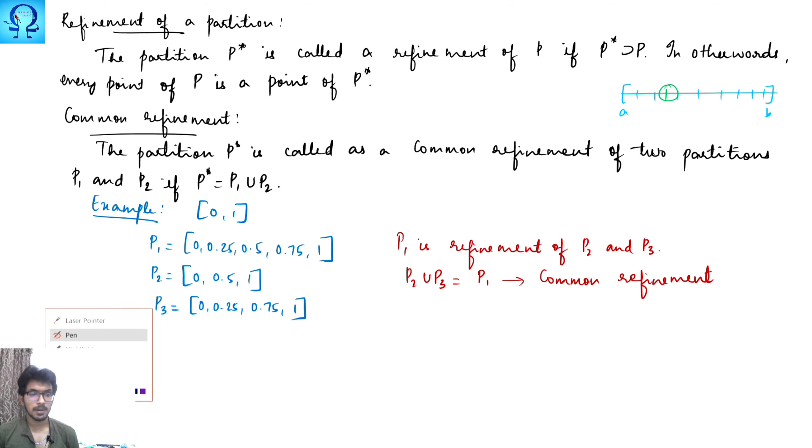Now you may ask me, are there any possible refinement which may not be a common refinement of two things? Yes, of course. Let me consider P4 to be 0, 0.2, 0.5, 0.8, 1. These are sets, not intervals. If you see, all the elements of P2 are members of P4, but if you make union of any two things, that will not be equal to P4. Here P4 is a refinement of P2, but it is not a common refinement to any of the possible partitions over here.